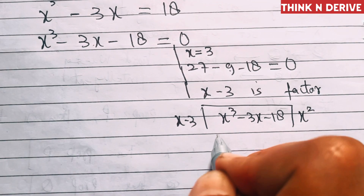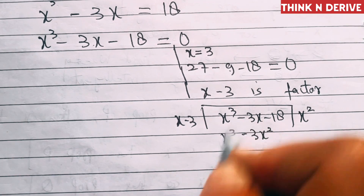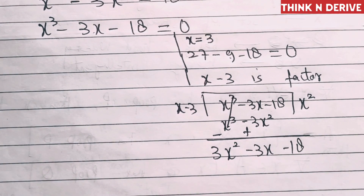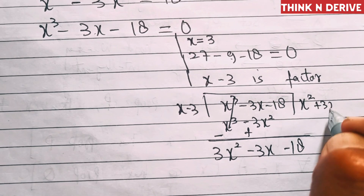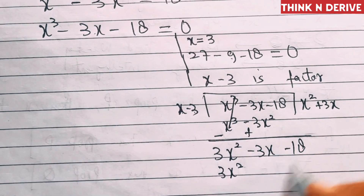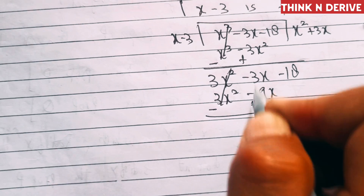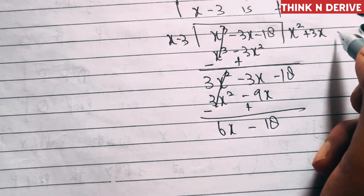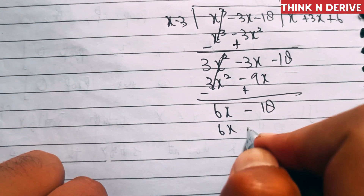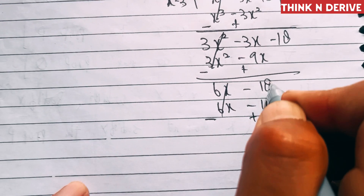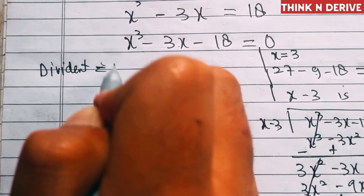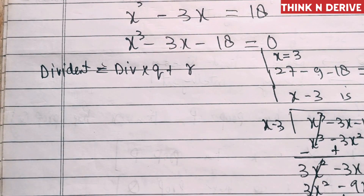Performing the polynomial long division of x³ - 3x - 18 by x - 3: we get x² + 3x + 6 as the quotient. At each step the remainder terms cancel out, and the final remainder is 0.